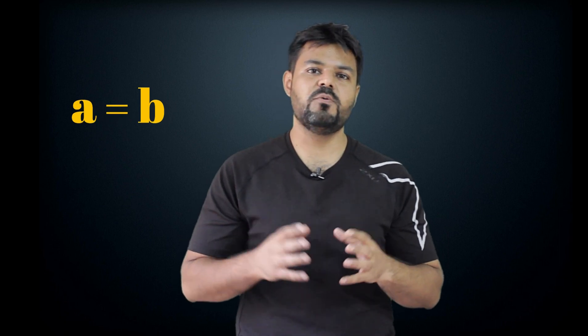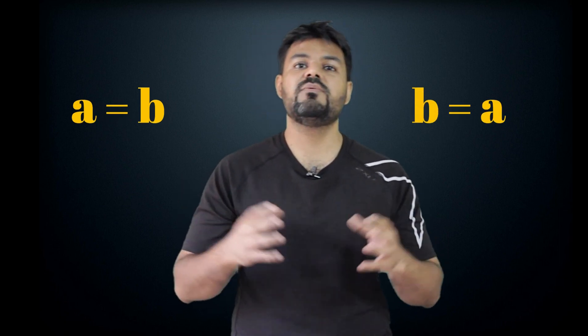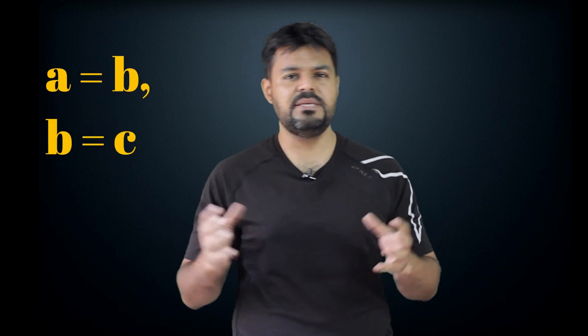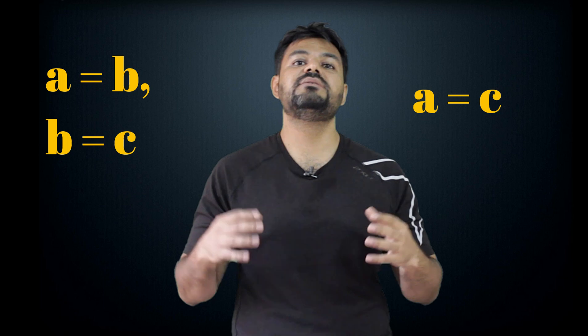The only thing that I want you to remember is the concept of equality. The concept of equality is when one thing is equal to the other, denoted by this symbol. If A is equal to B, then it is evident that B is also equal to A. And if A is equal to B and B is equal to C, it is evident that A is equal to C.